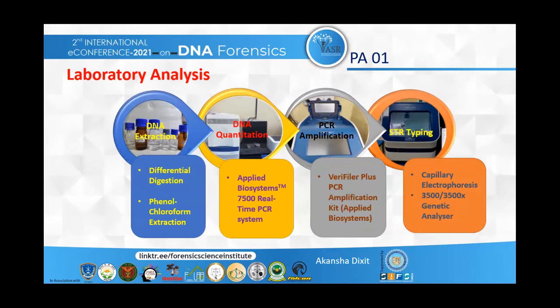Laboratory analysis followed two main steps. First, DNA extraction: the process by which DNA is separated from proteins, membranes, and other cellular materials contained in the cell. It was carried out through differential digestion and separation phase, followed by phenol-chloroform extraction. Second, DNA quantitation, performed using the Applied Biosystems 7500 Real-Time PCR system. All samples were quantified using this system, which consists of five PowerPlex calibration standards and calibration buffer, and quantitates total human DNA and Y-DNA separately.